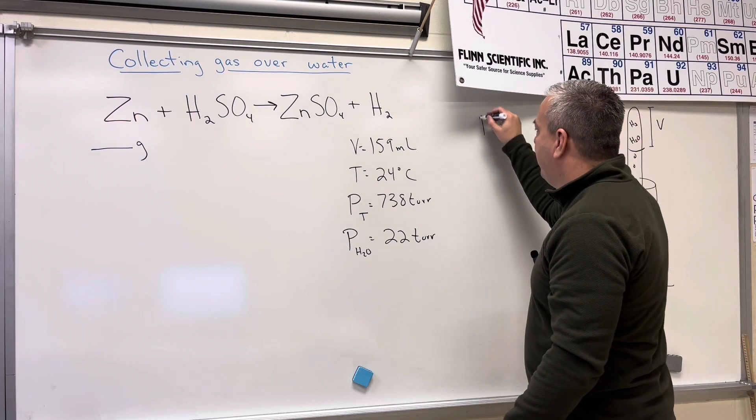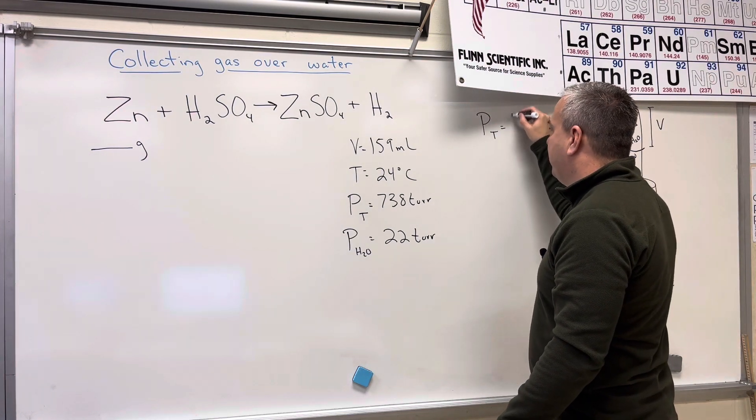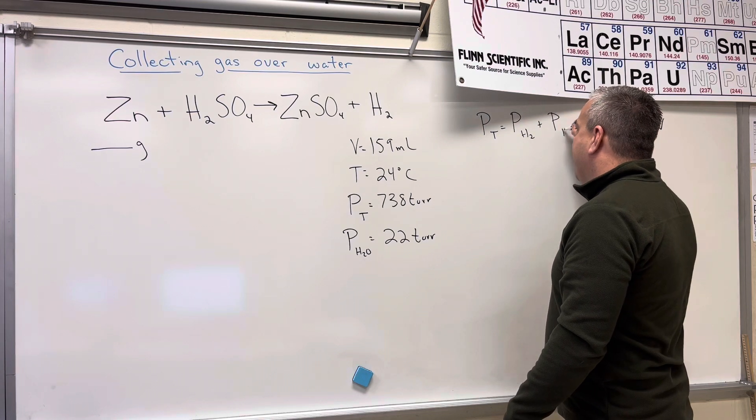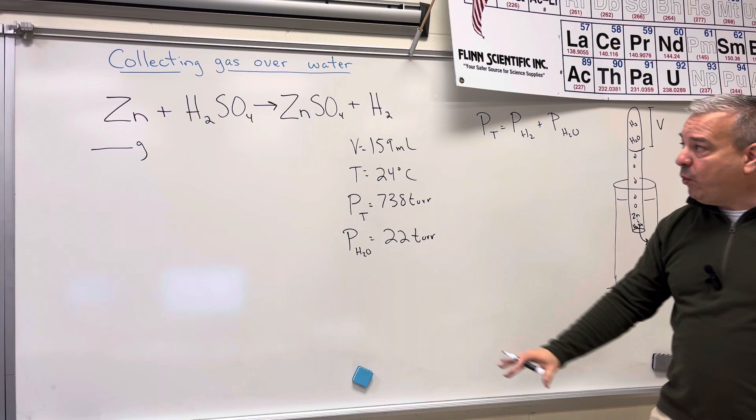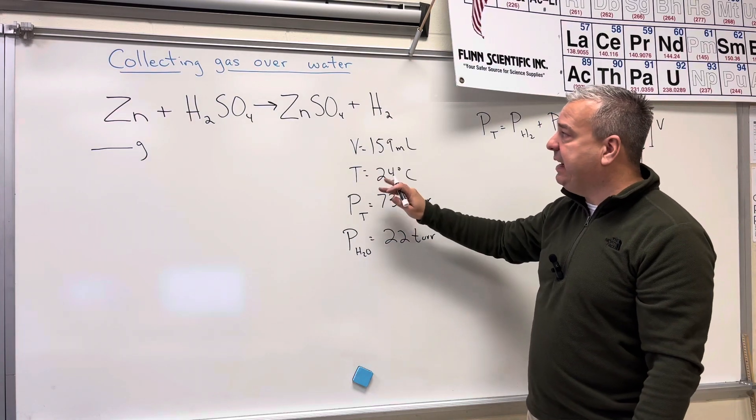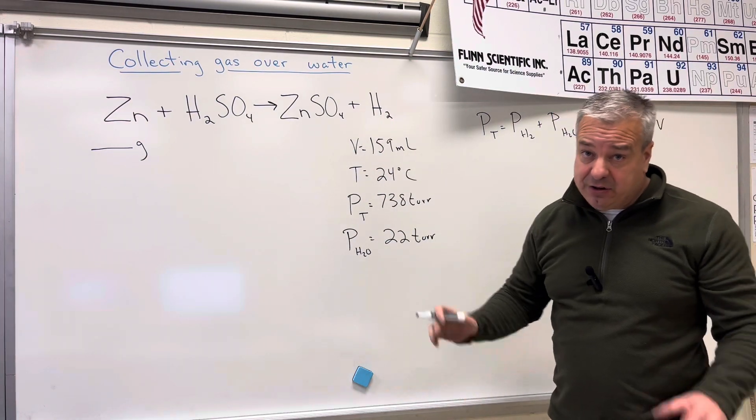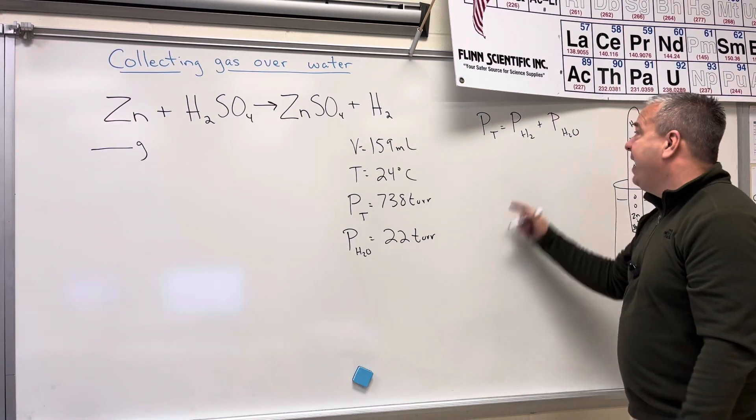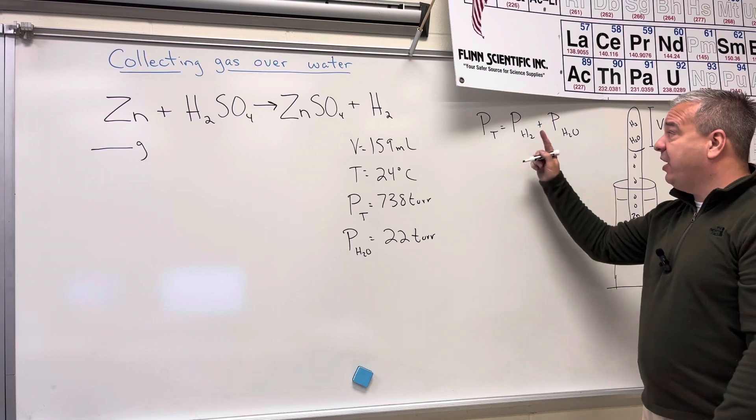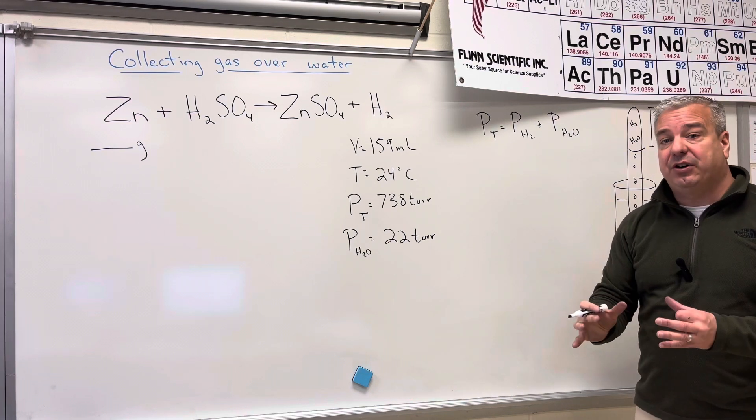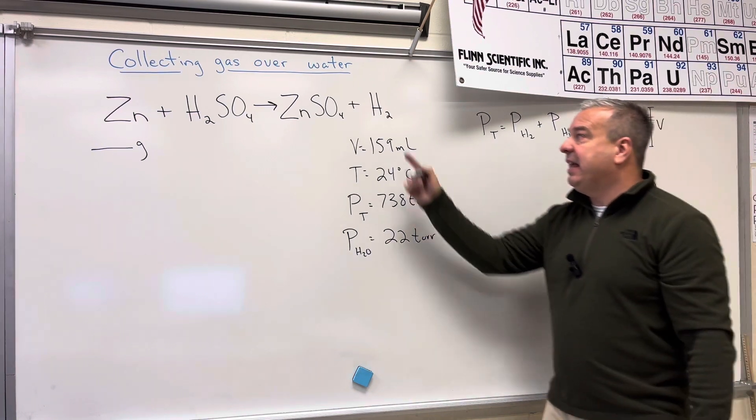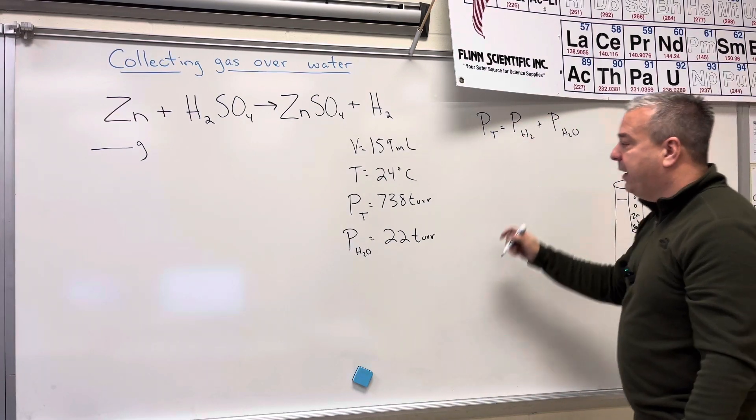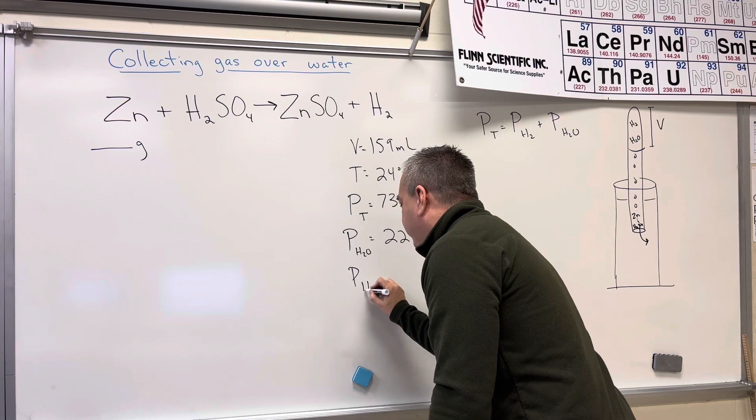So basically what we have is that the total pressure is going to be equal to the pressure of the hydrogen and the pressure of the water. When I use PV equals NRT to calculate the moles of hydrogen, because I'm going to do that soon, I can't use the total pressure. I can't use the water vapor pressure. I can only use the pressure of the hydrogen if I'm trying to find the moles of hydrogen.